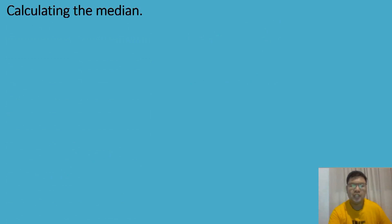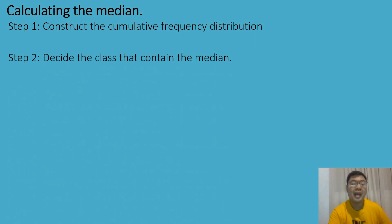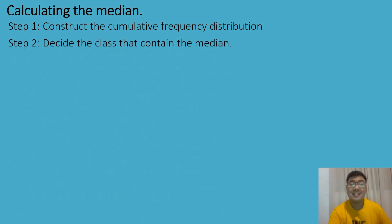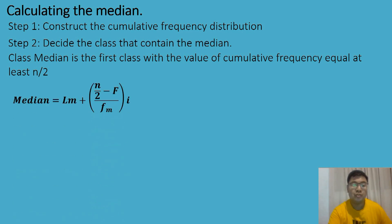The next measure of central tendency will be the median. Calculating the median for the grouped data, we have the following steps. The first step is to construct a cumulative frequency distribution. Then you will decide the class that contains the median. The median class is the first class with the value of cumulative frequency equal to or at least n over 2.